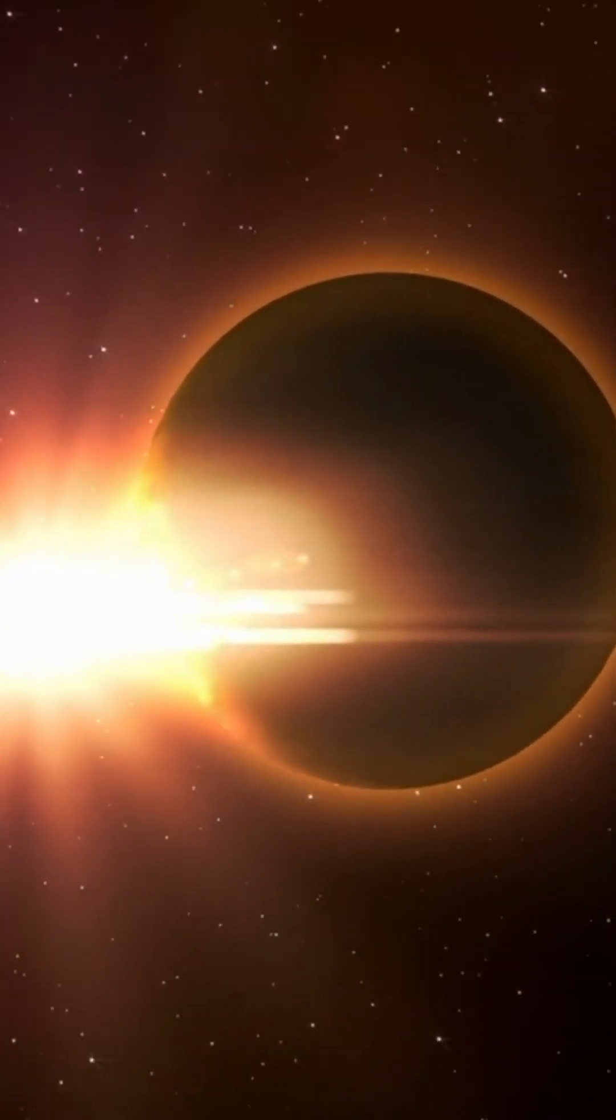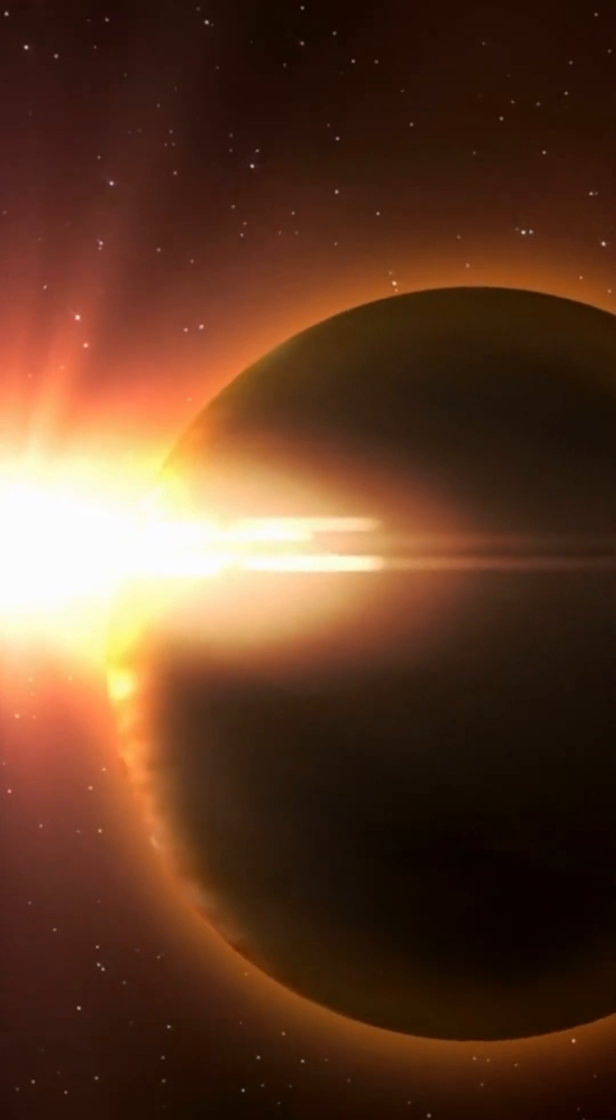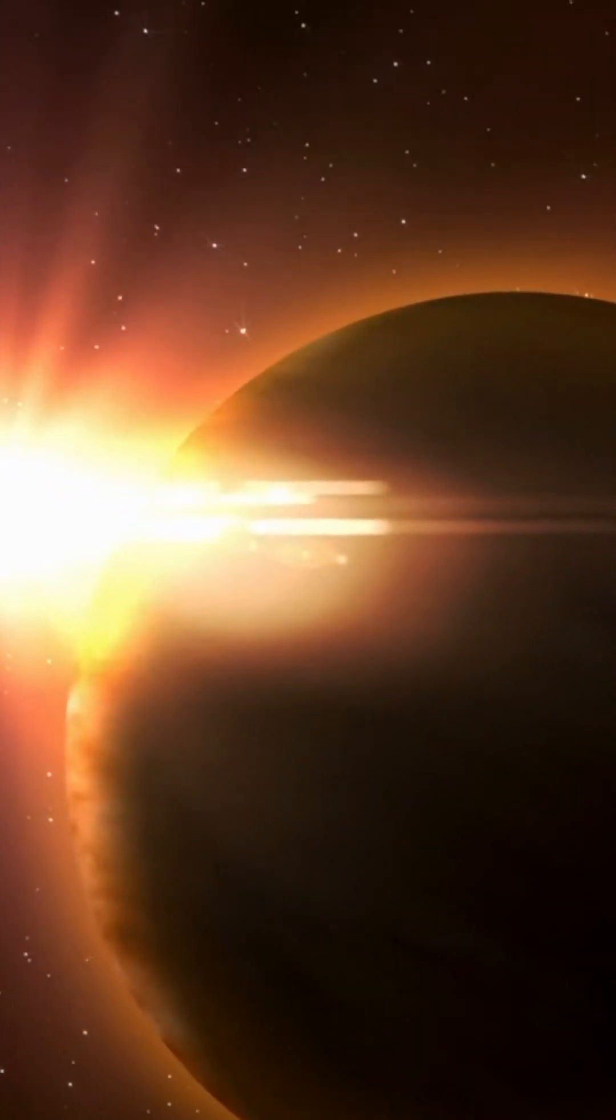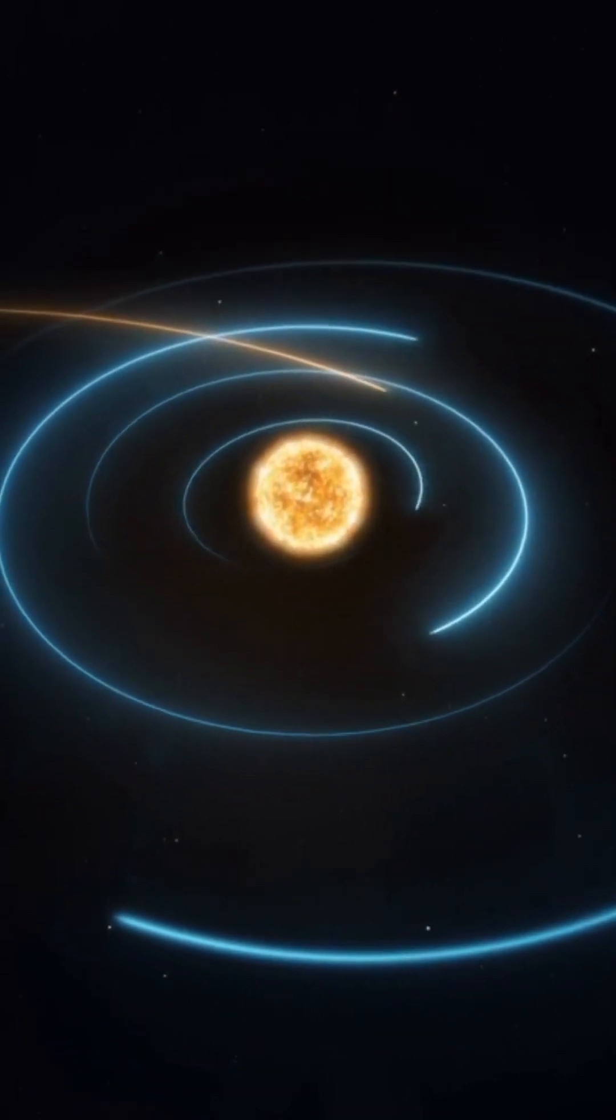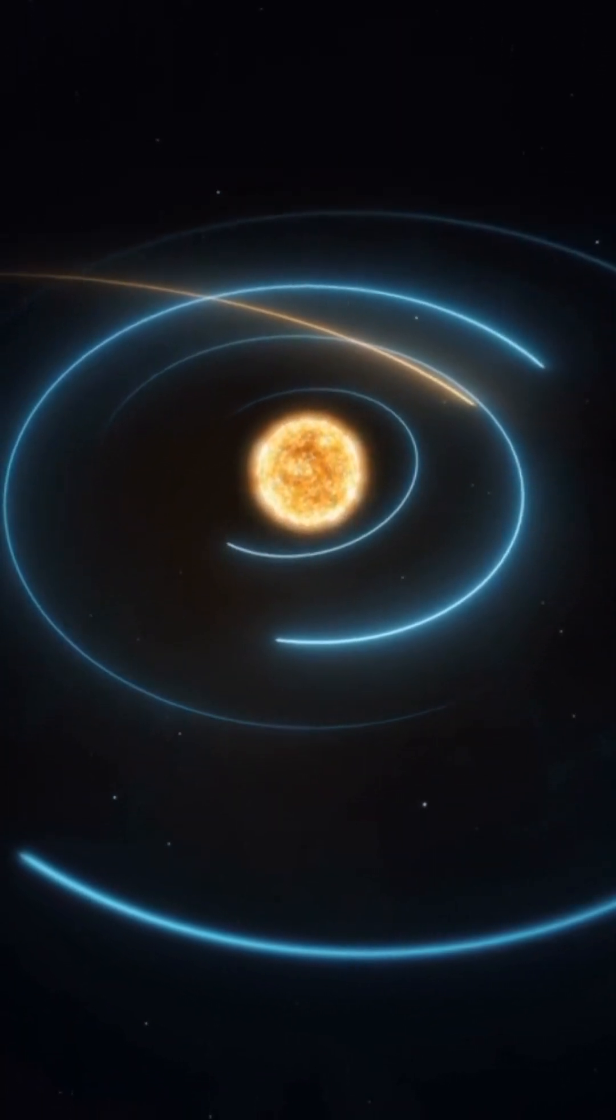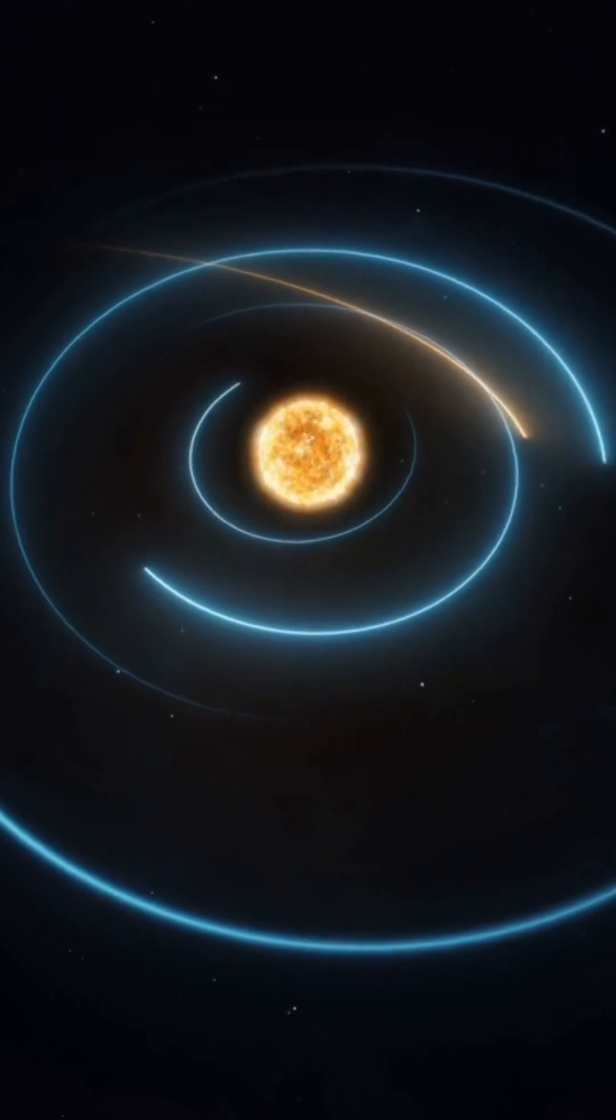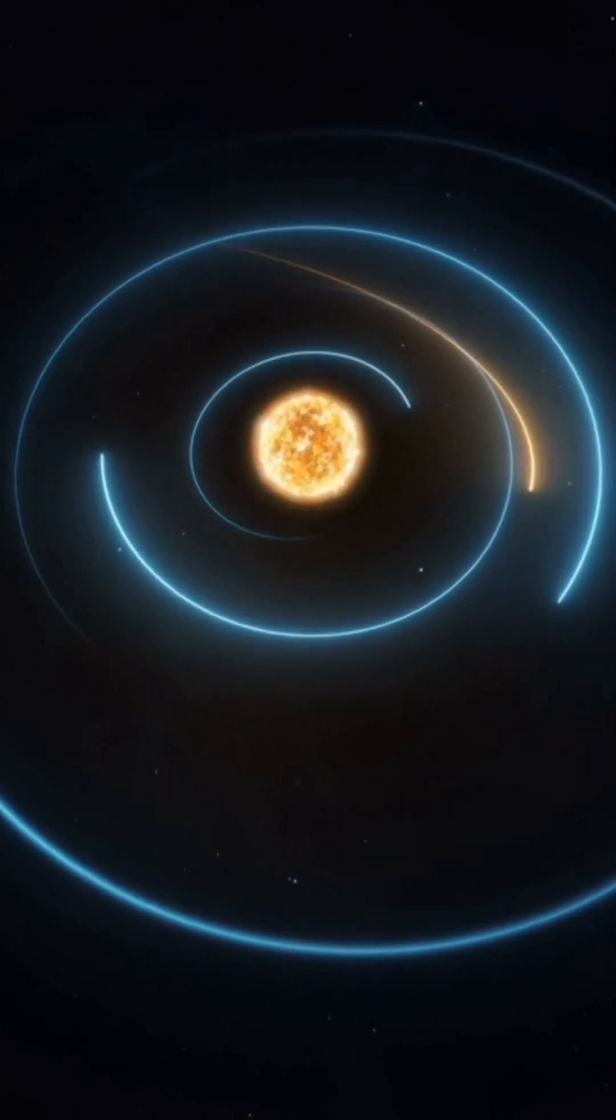This so-called second moon is more accurately described as a quasi-moon, a diminutive asteroid. Its existence came to light only recently, and its orbital trajectory is remarkably intricate, extending out to approximately the midway point between Mars and Venus.